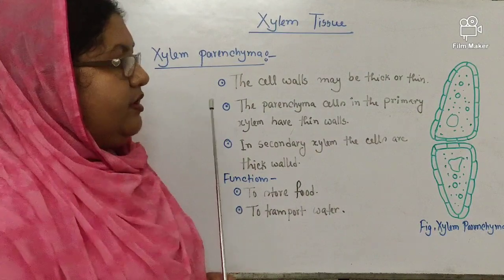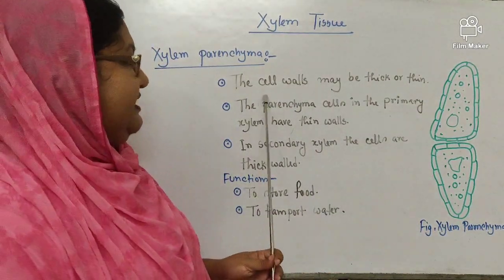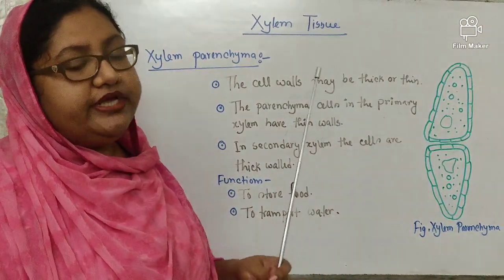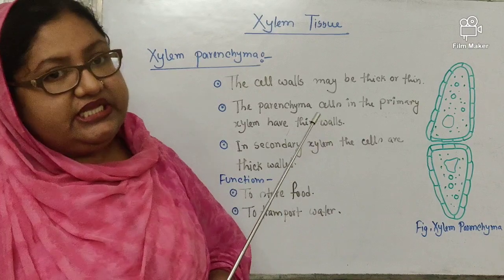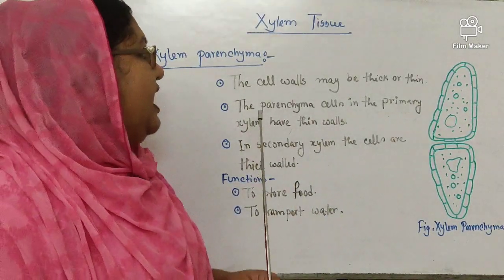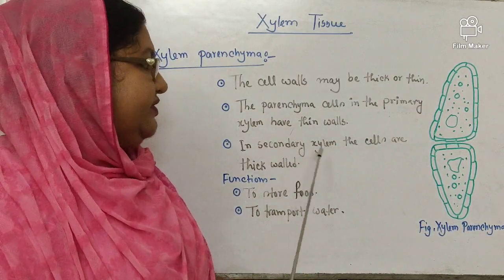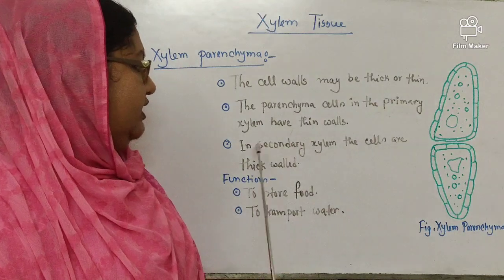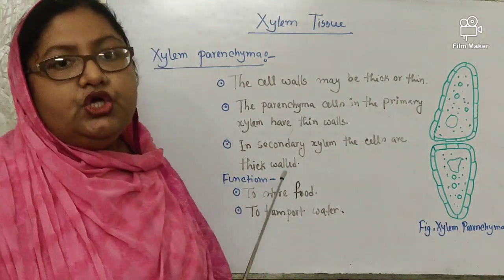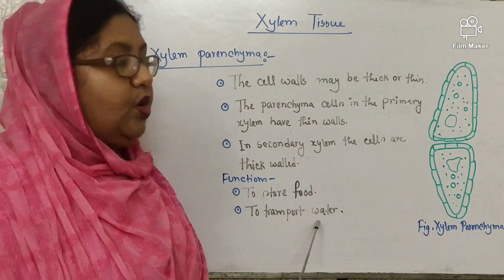Now, xylem parenchyma. The cell walls may be thick or thin. The parenchyma cells in the primary xylem have thin walls; in secondary xylem, the cell walls are thick. The function: to store food and to transport water.